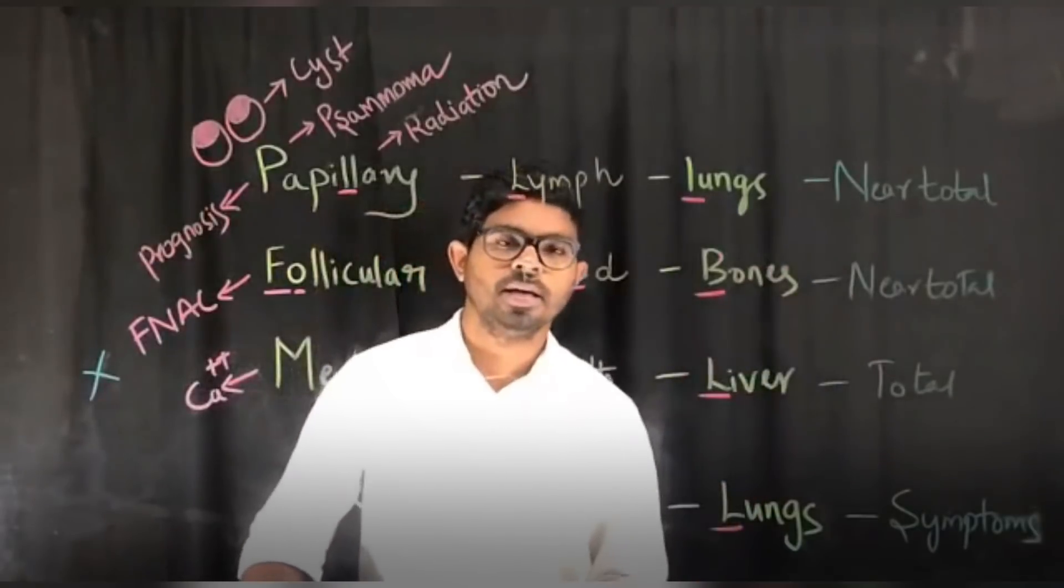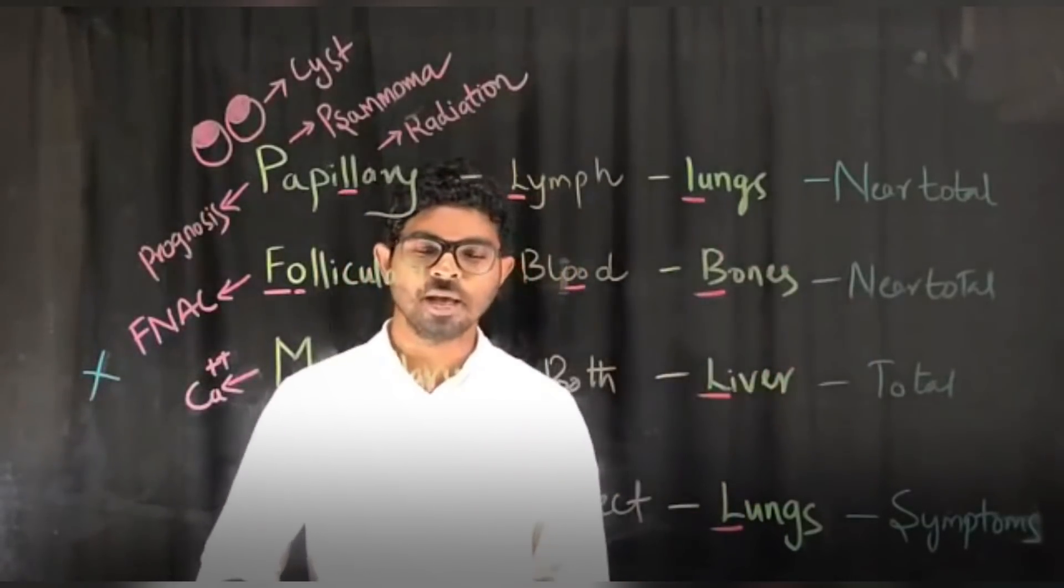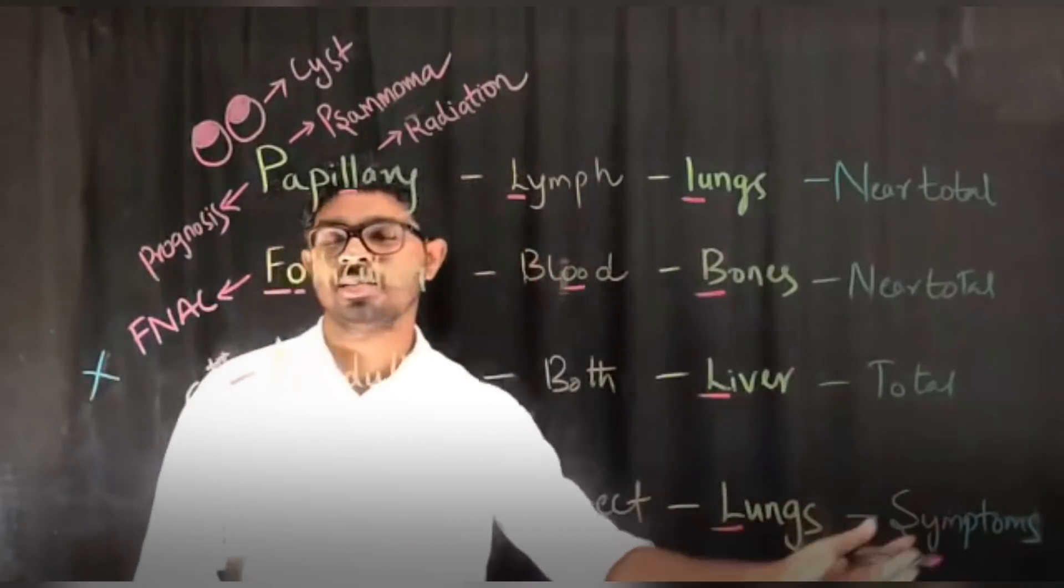The fourth column is about treatment. Papillary is treated by near-total thyroidectomy. Follicular is by near-total thyroidectomy again. Medullary is by total thyroidectomy, whereas anaplastic is simple - it takes symptomatic treatment.